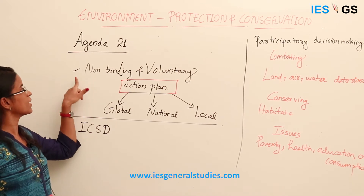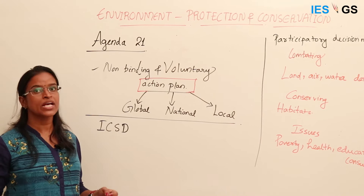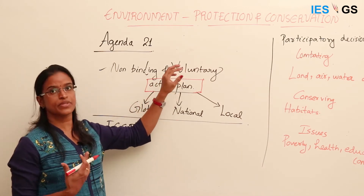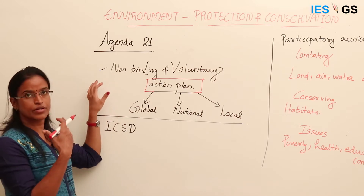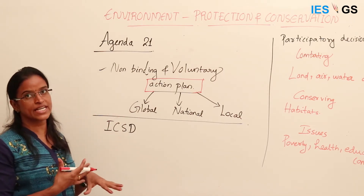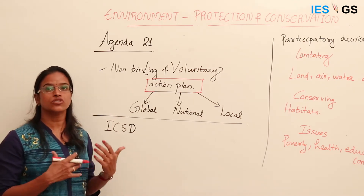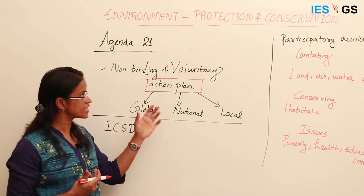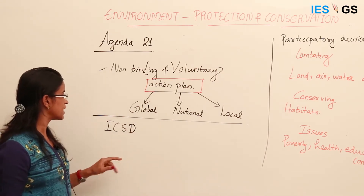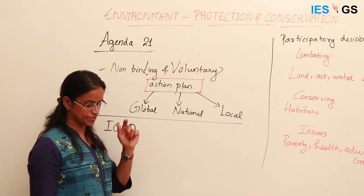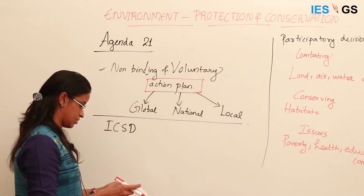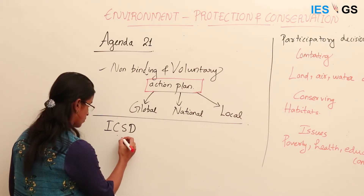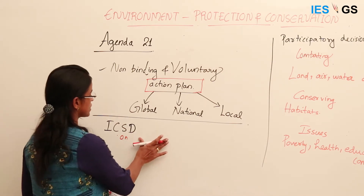This action plan is not a binding document and participation is also voluntary. Countries pledging to participate in Agenda 21 are not pressurized to take part, and if they are not following the guidelines, no action can be taken against them — it is not legally binding. Countries pledging to be part of Agenda 21 will be monitored by the Commission for Sustainable Development under the United Nations, which is the monitoring agency.